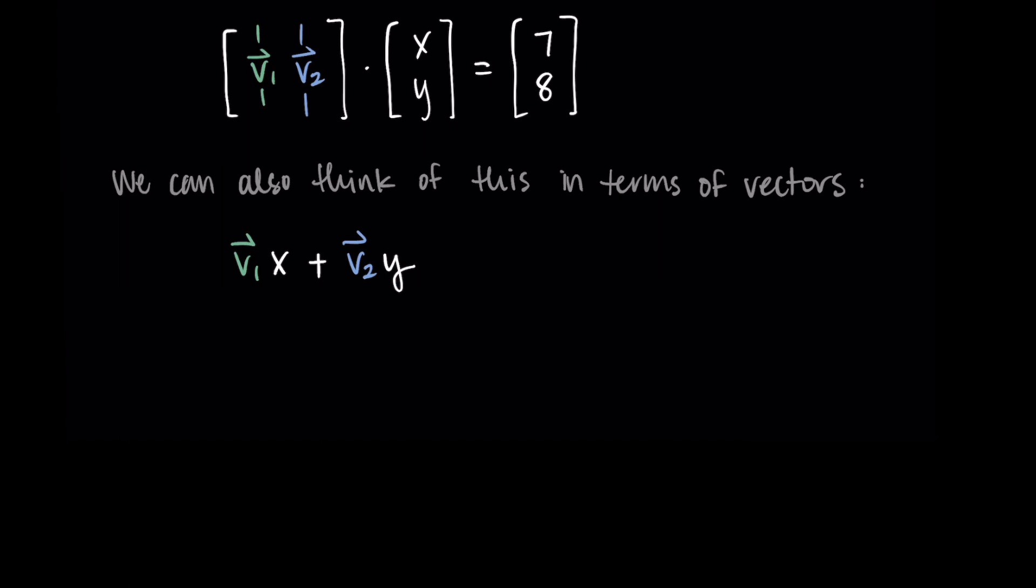Then we can think of the right hand side of the equation as our b vector. And then when we go to replace our vectors back with the system we started with, we'd have 1 negative 4 times x, 3 2 times y, and that would be equal to 7 8.